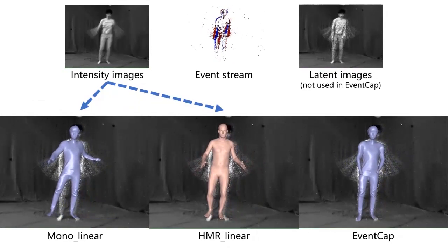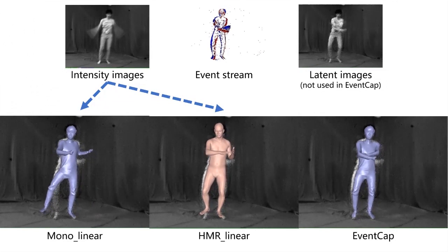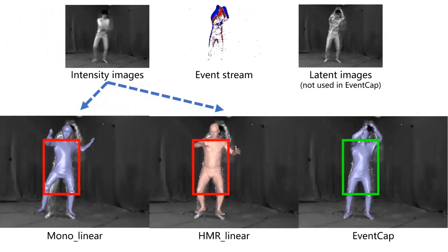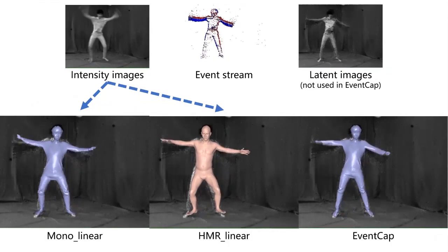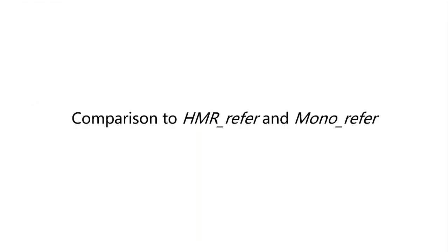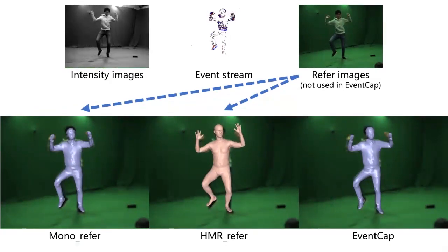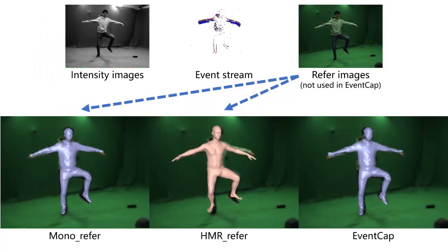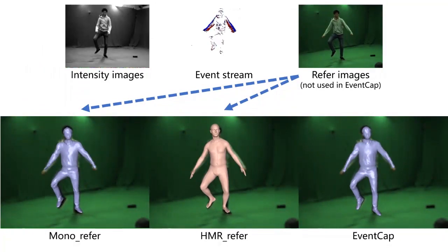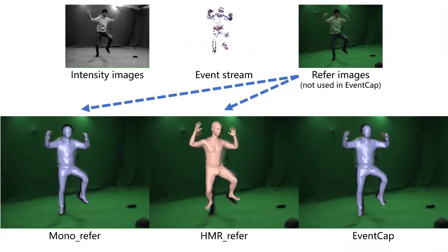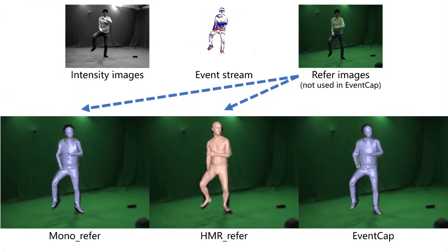Note that such linear upsampling based methods fail to recover the high frequency motion details. In addition, we apply the two baseline methods to the RGB images captured using a high speed camera. Note that our method does not rely on the high frame rate RGB images, and uses much less data bandwidth compared to the reference-based methods. Our approach achieves comparable tracking accuracy, and overlays better onto the reference view.